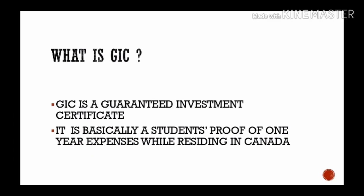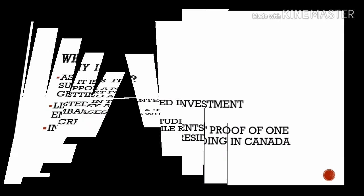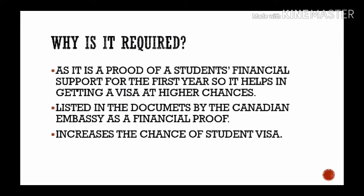What is GIC? GIC means Guaranteed Investment Certificate. It is basically a student's proof of one year of expenses while residing in Canada. Moreover, it is a program introduced by the Canadian embassy in order to ensure that students have enough funds to support themselves while living in Canada for the first year of their study.